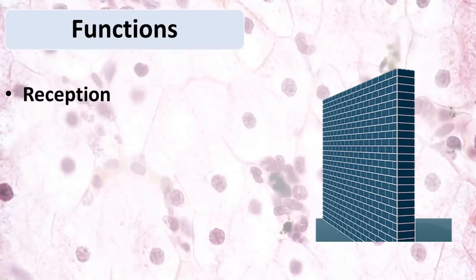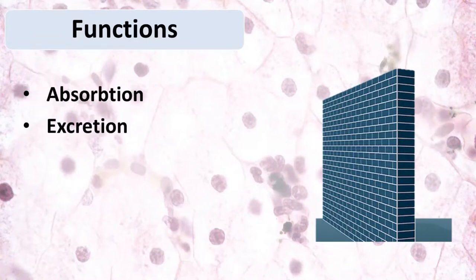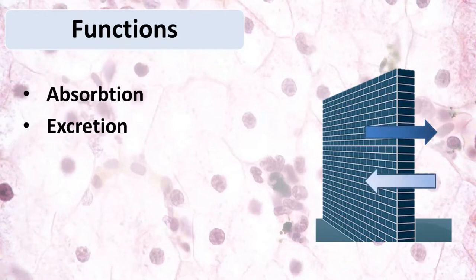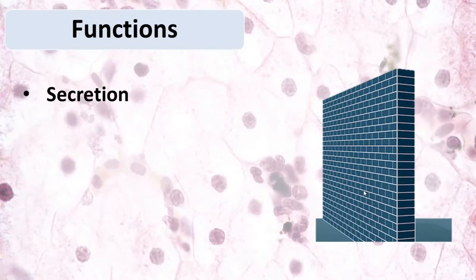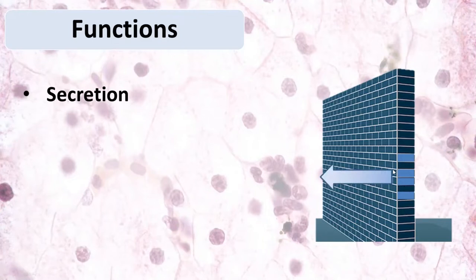Reception: there are sensory types of epithelia which provide receptory function. Absorption and excretion: absorption is the passageway of some substances from outer to inner environment, and excretion in the opposite way — some waste products are excreted via the epithelium. Secretion: there are secretory cells inside the epithelium, and they synthesize some substances and excrete them from the organism to the outer environment, into the bloodstream, or into the ducts.